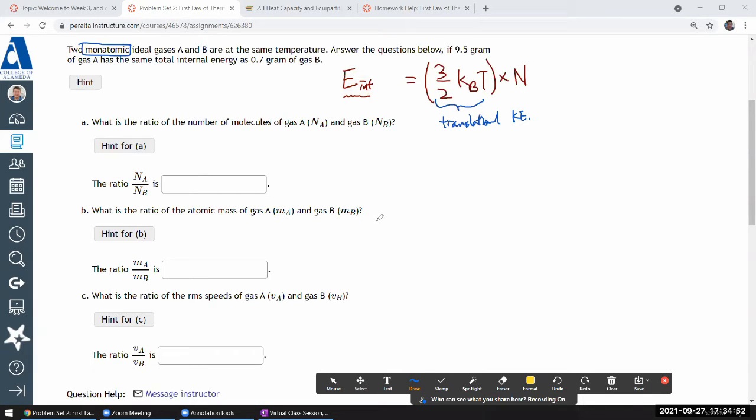So with that, now the rest is just working through this expression. One thing that's going to turn out to be useful to have on hand is that this quantity here represents the translational kinetic energy or one-half mv squared averaged. The question says that these two are at the same temperature. Good.